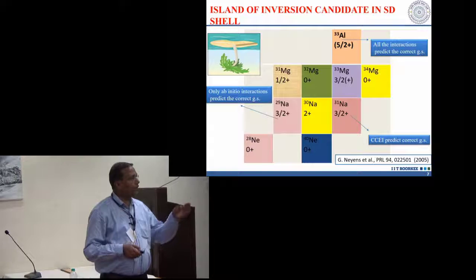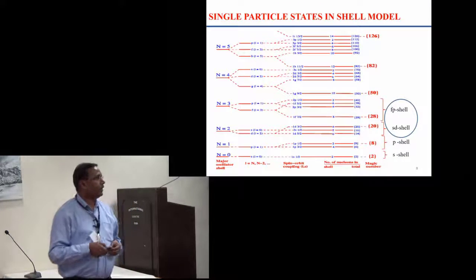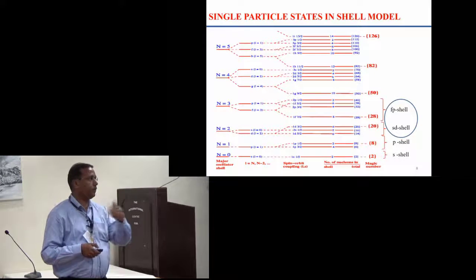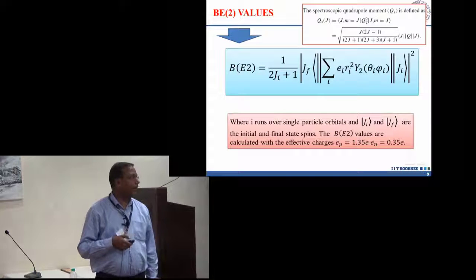For example, even if you take the SD shell, CCEI results are enough. If you take the normal SD shell, it is possible for some cases once you go to N equal to 20 regions, the inclusion of PF orbitals is obvious.